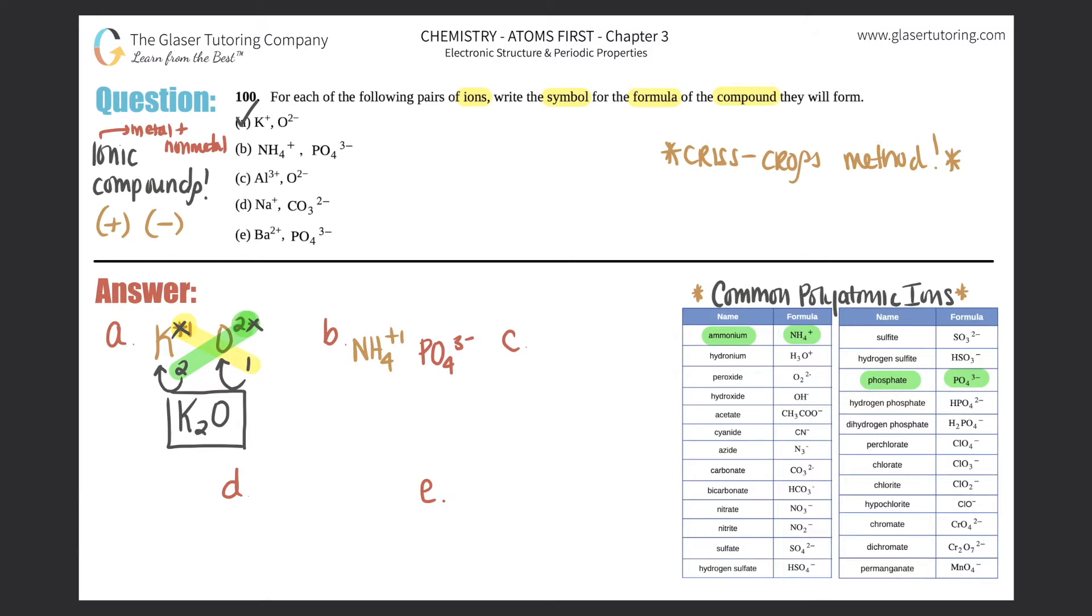We do the crisscross rule: the +1 crisscrosses down to tell me I only need one whole phosphate, so one whole PO4. The 3- crisscrosses down to tell me I need three whole ammoniums, NH4. Now when I write this, and I have multiple of a polyatomic ion - in this case three NH4s - you always put that in parentheses. So I have the NH4 and I'm going to say I have three of this whole thing.